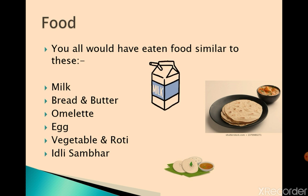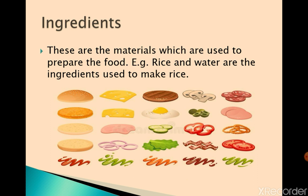Milk, bread and butter, omelette, egg, vegetable and roti, idli, sambhar. Now, what kind of things are used to make food? Those are called ingredients. Ingredients are the materials which are used to prepare the food.